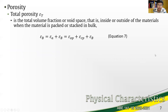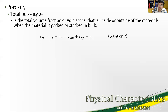Lastly, we have total porosity, which is the total volume fraction of void space inside or outside of the materials when packed or stacked in bulk. In equation, it is apparent porosity plus bulk porosity, or equivalently open pore porosity plus closed pore porosity plus bulk porosity, since apparent porosity equals open pore porosity plus closed pore porosity.